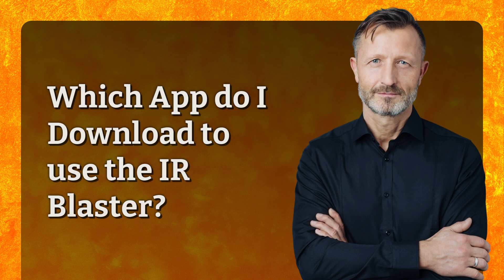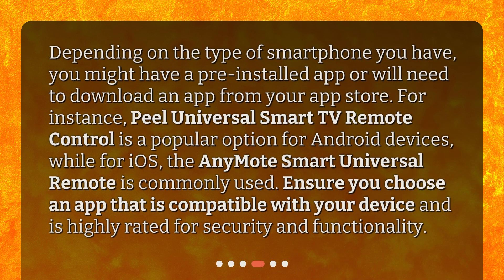Depending on the type of smartphone you have, you might have a pre-installed app or will need to download an app from your app store. For instance, Peel Universal Smart TV Remote Control is a popular option for Android devices, while for iOS, the AnyMote Smart Universal Remote is commonly used. Ensure you choose an app that is compatible with your device and is highly rated for security and functionality.